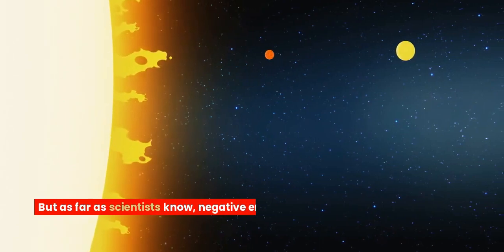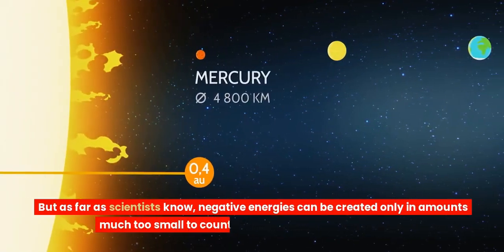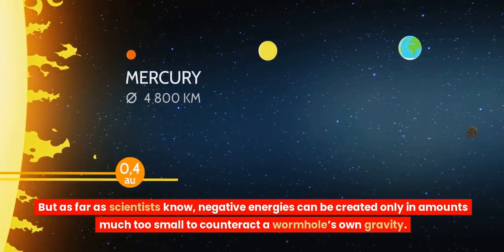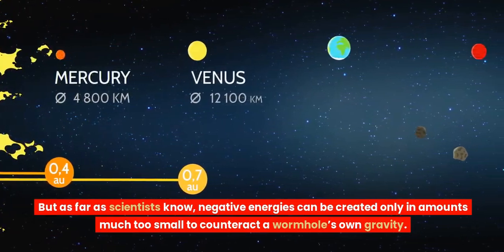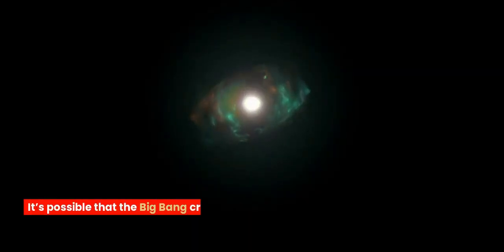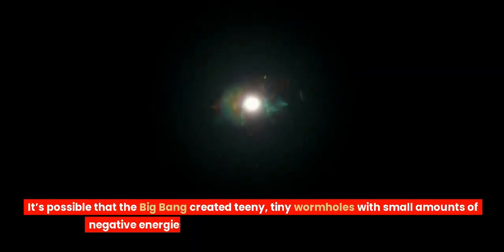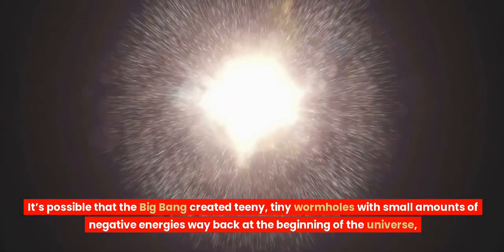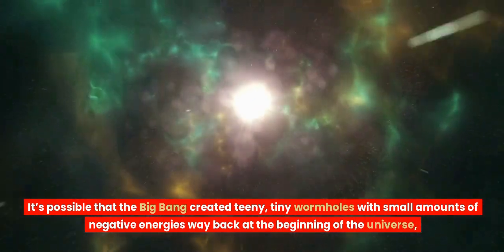But as far as scientists know, negative energies can be created only in amounts much too small to counteract a wormhole's own gravity. It's possible that the Big Bang created teeny, tiny wormholes with small amounts of negative energies way back at the beginning of the universe.